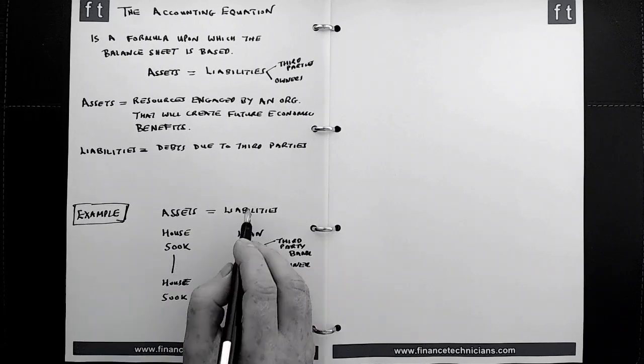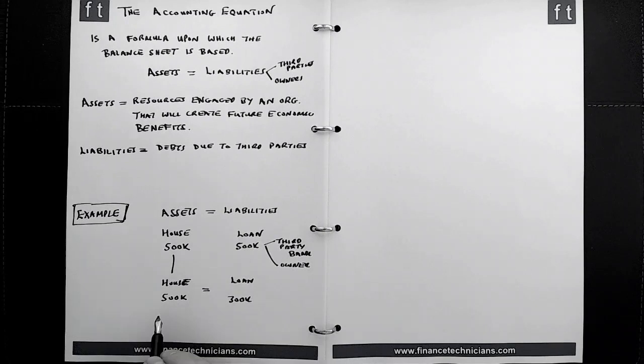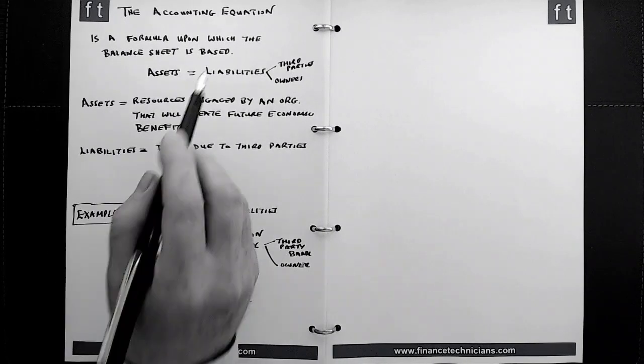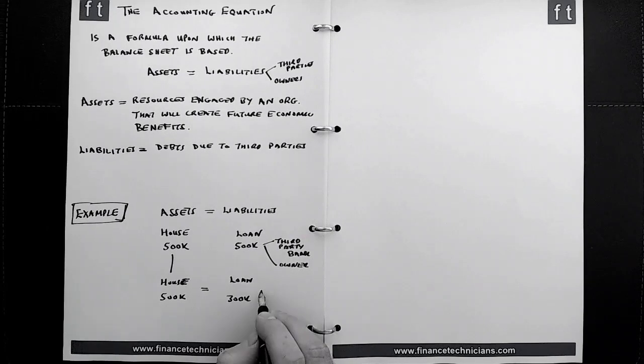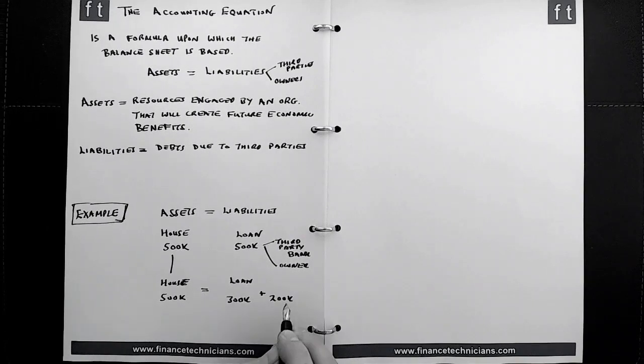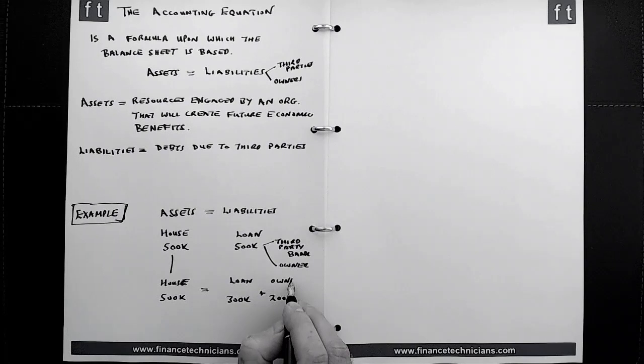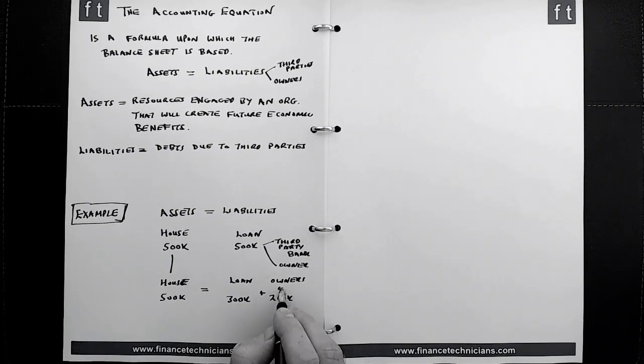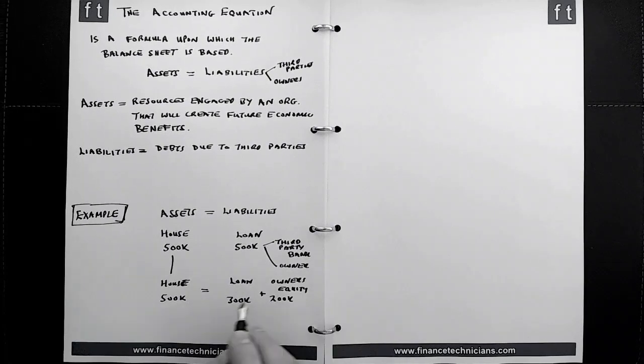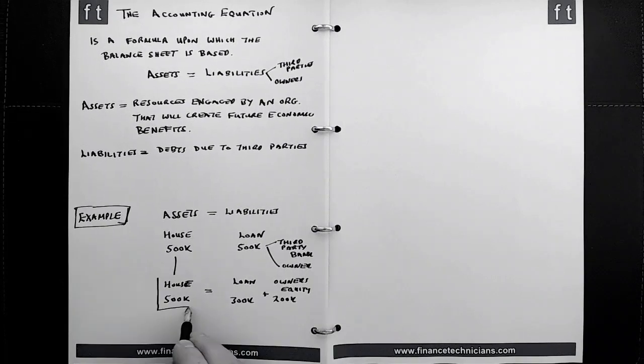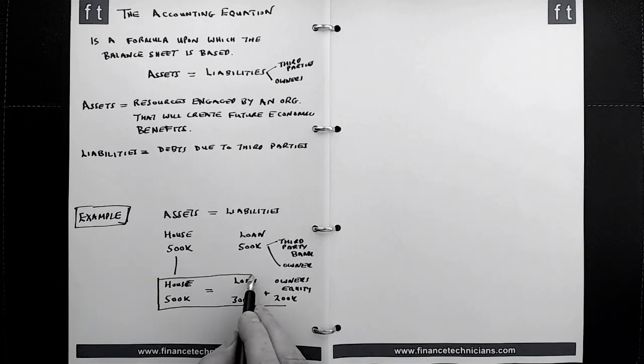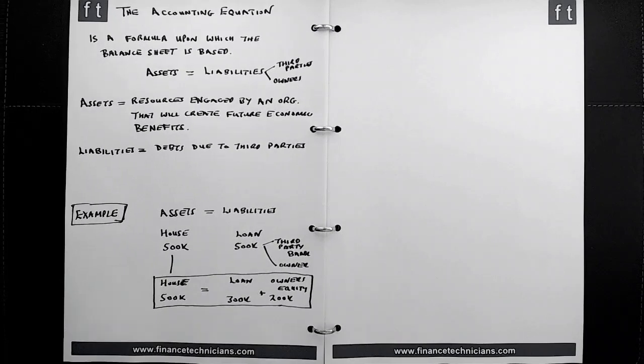Now we have a situation where the assets and the liabilities do not match. There's a 200k shortfall. But based on this formula that assets equal liabilities, we know that we need to add to that 200k, and what is that 200k? It is your owner's equity, i.e., your share of this property here. And when you think about it, if at this particular point in time you decided to sell that property and you got 500k when you sell that property, you would give 300k back to the bank and you would retain 200k for yourself.